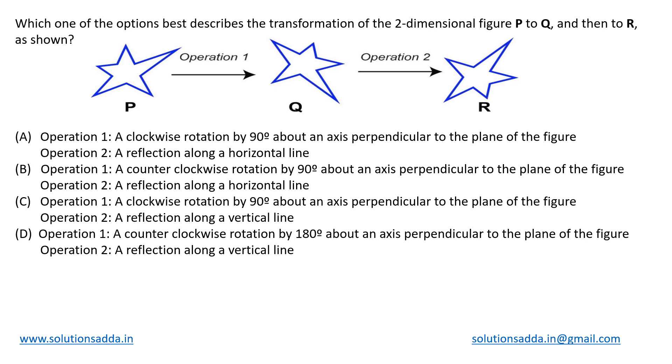This is a spatial aptitude question about figure transformations. We have been given figure P initially, which in one operation will get converted to figure Q, and then from figure Q by applying one more operation, it will finally get converted to figure R. What we basically need to do is determine what are these operations 1 and 2 that will help us achieve this particular task.